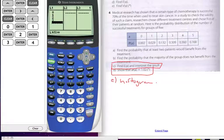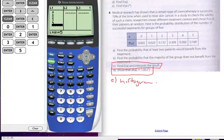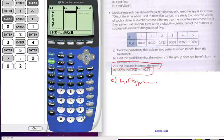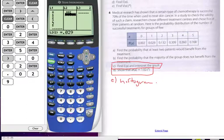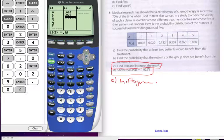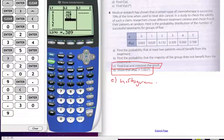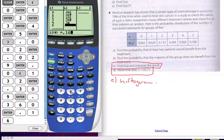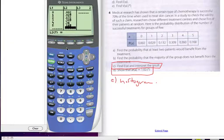And these are my outcomes for my random variable. My probabilities that are associated with it are 0.002, 0.029, 0.132, 0.309, 0.360, 0.168. And those are all my probabilities. All these values should add up to 1 if I've entered them in correctly. So I have them in my list here.